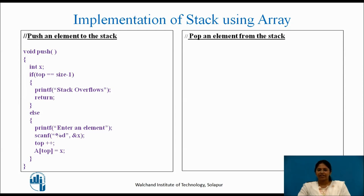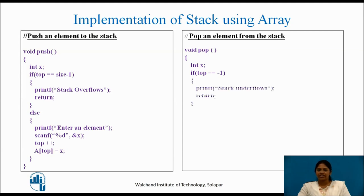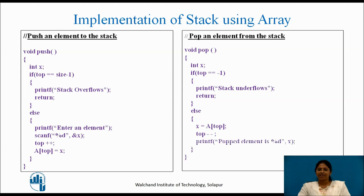Similarly, we can write the pop operation. First, declare an integer variable x so that the popped element is stored. In the pop algorithm, the first step checks whether the stack has underflown, done by checking whether top is pointing to minus 1. If it is pointing to minus 1, the stack has underflown and we return to main. If the stack has not underflown, the element where top is pointing is removed and placed in x, top is decremented by one location, and then the popped element is displayed.